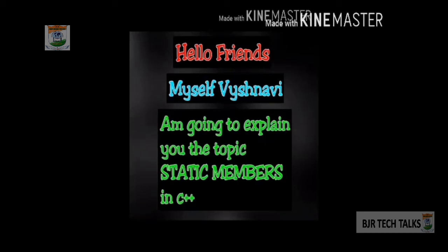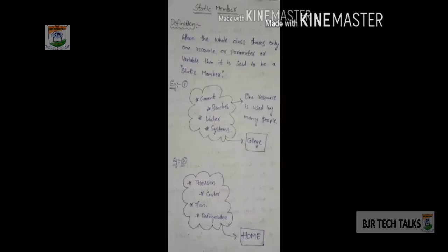Hello friends, myself Aishnavi. I am going to explain you the topic static members in C++. Before entering into the concept, let us see the definition of static member. When the whole class shares only one resource or parameter or variable, then it is said to be a static member. Let us take some real life examples to understand this concept.